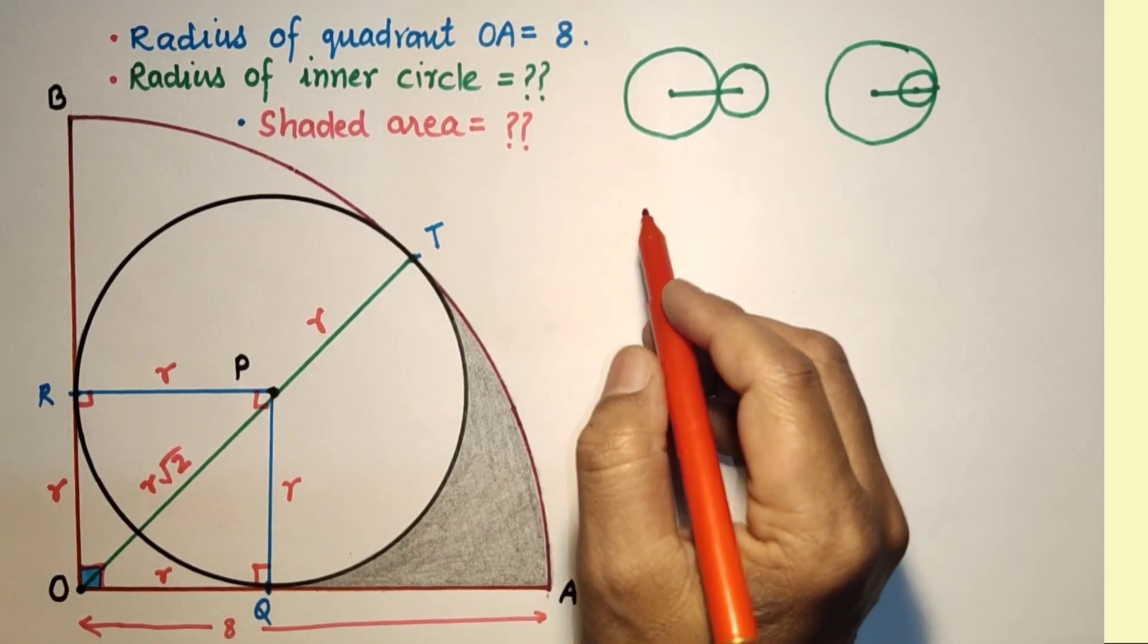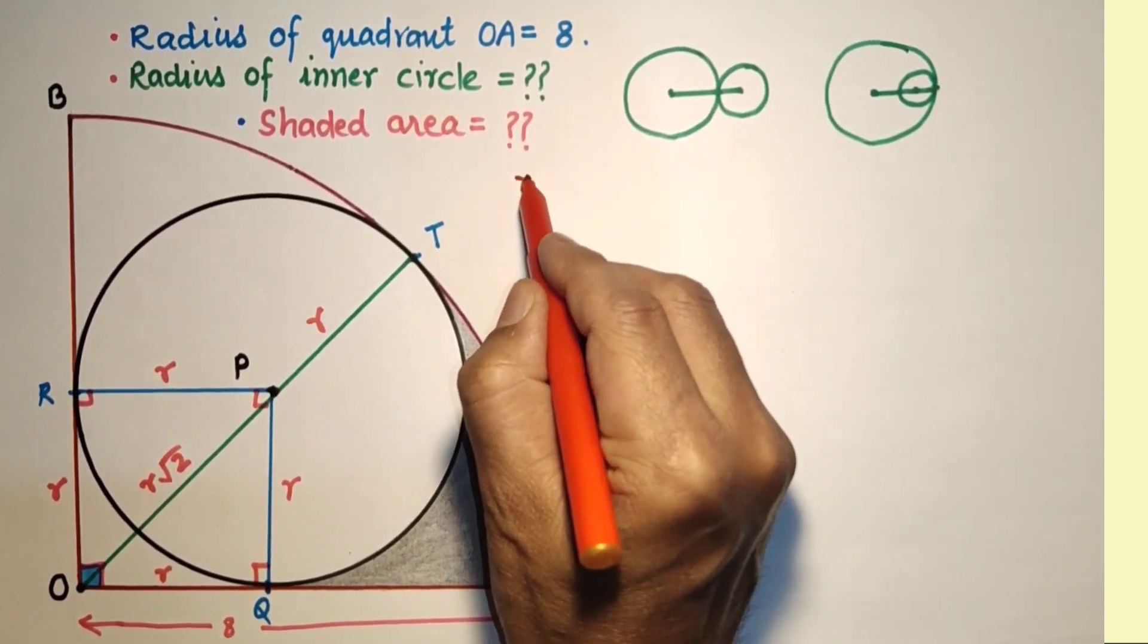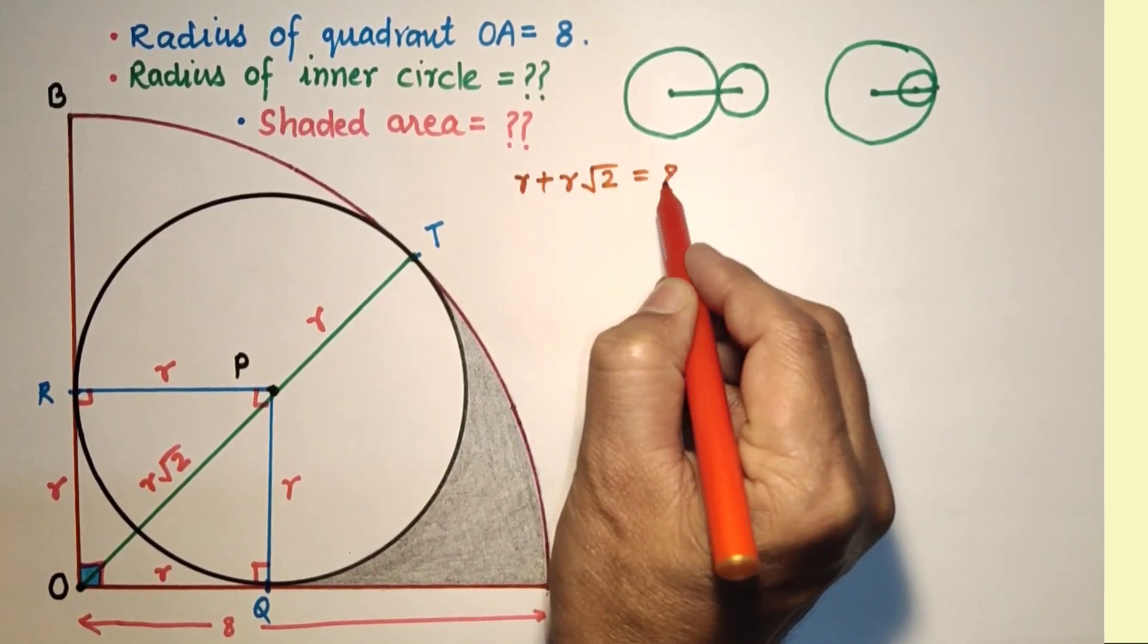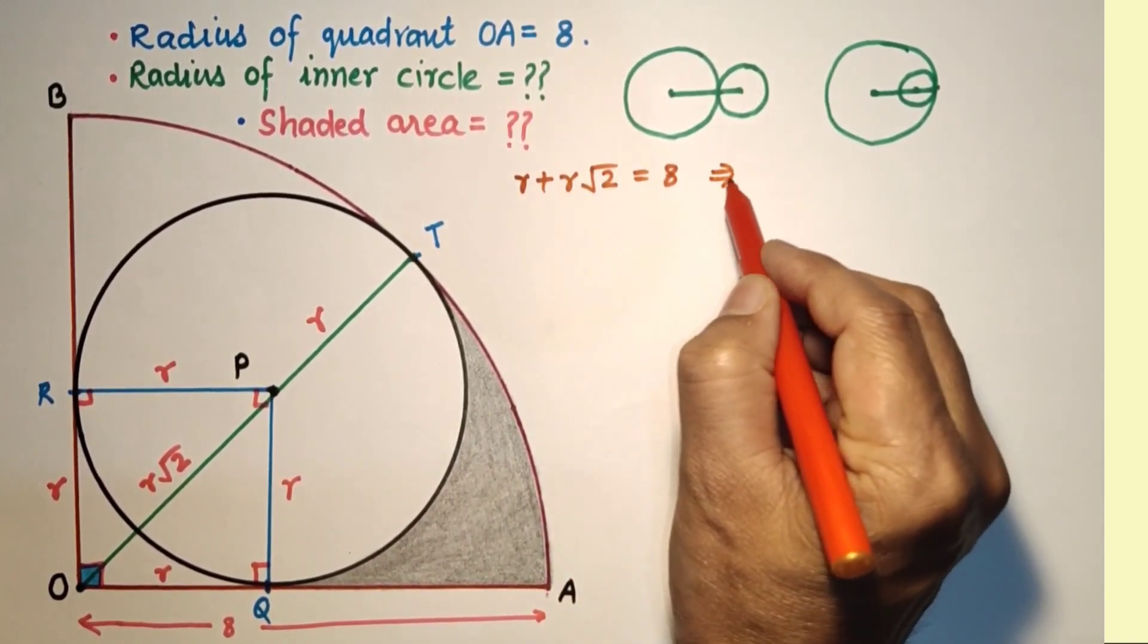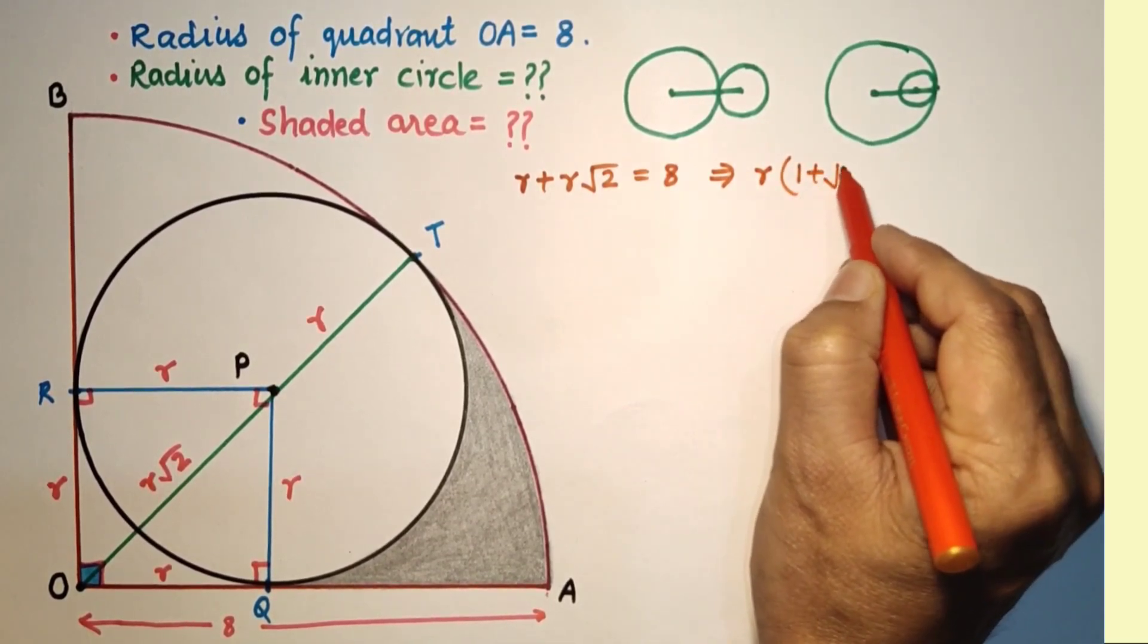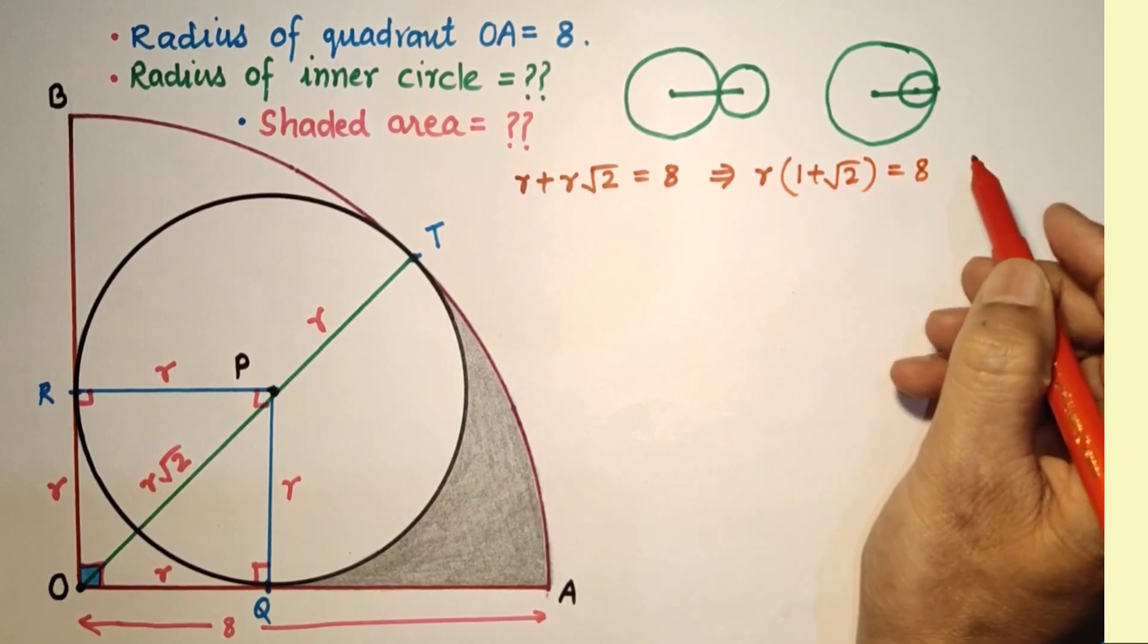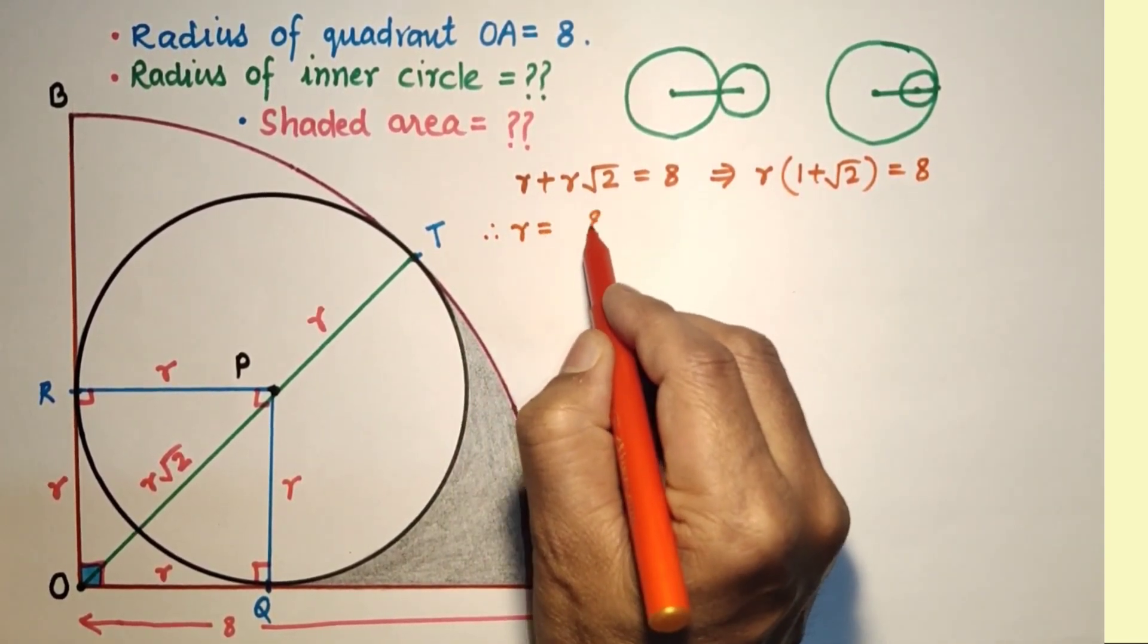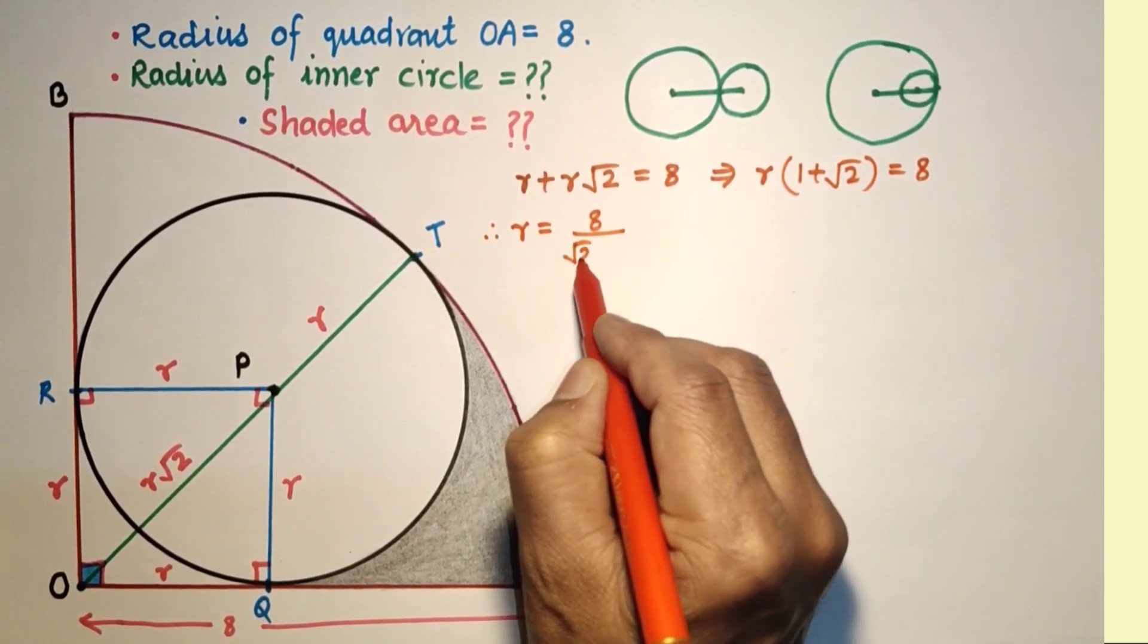So R√2 plus R equals 8. We can say that R(1 + √2) equals 8. If we take R common, R(1 + √2) = 8. Therefore R equals 8 upon (√2 + 1).